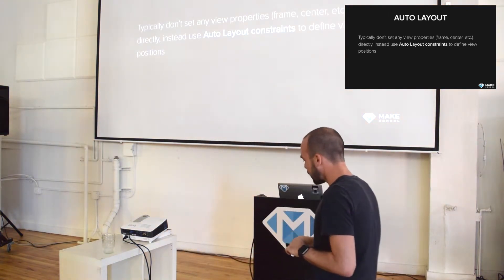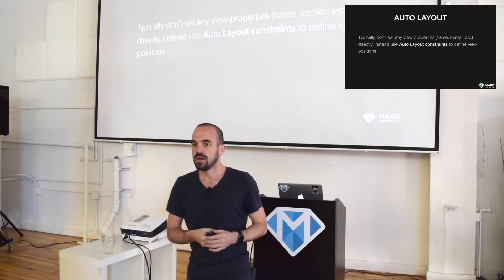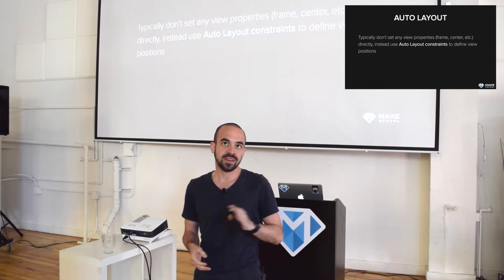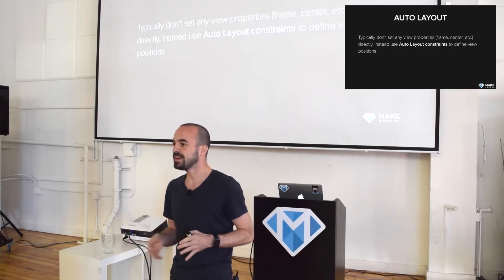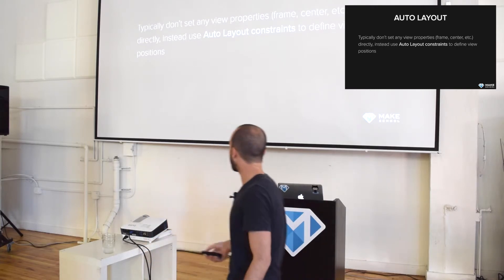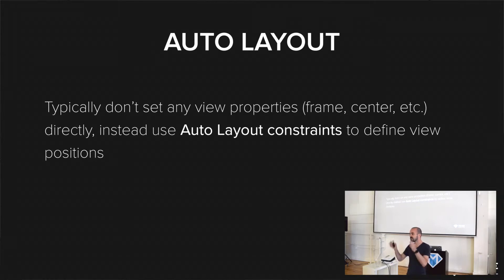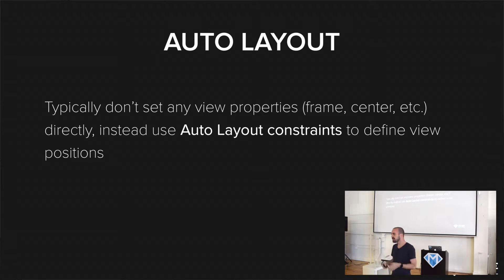Auto layout — what is auto layout? The view properties I just talked about — the frame, the center, and so on — these days when you write iOS layout code, you actually don't set these properties on your own anymore. Back then, when I started, there was no auto layout, so you had to calculate positions manually, then set frames and center properties. But now we use auto layout, which replaces such manual frame calculation for almost all cases, and it does that by allowing you to define constraints. So instead of setting a position to 500, 200, you say: I want this to be in the center of the parent view, half as big as the parent view, offset by 50 from the bottom, maybe 100 offset by another view. You basically describe relations between different views through constraints.